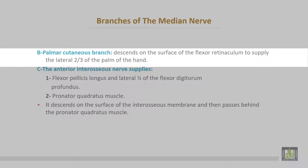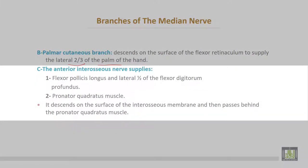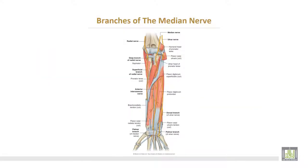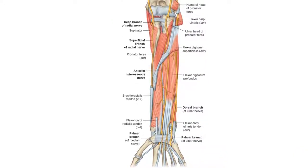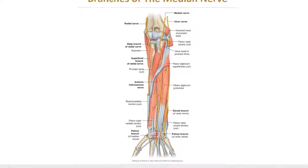Further branches of the median nerve: the palmar cutaneous branch descends on the surface of the flexor retinaculum to supply the lateral two-thirds of the palm of the hand. The anterior interosseous nerve supplies the flexor pollicis longus, the lateral half of flexor digitorum profundus, and the pronator quadratus muscle. It descends on the surface of the interosseous membrane and passes behind pronator quadratus. In the forearm, the median nerve descends between the superficial and deep flexor muscles, passing deep to the flexor retinaculum inside the carpal tunnel, and before entering the tunnel gives the palmar cutaneous branch.